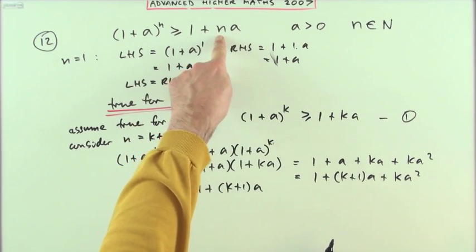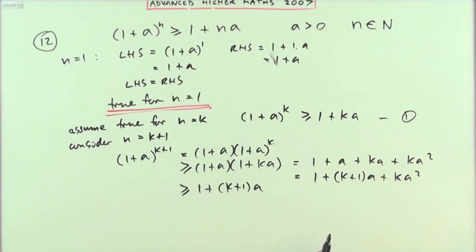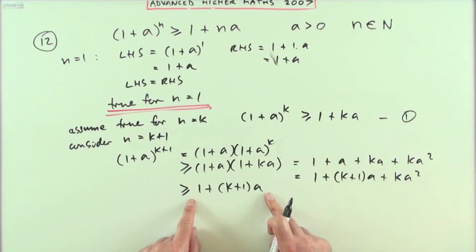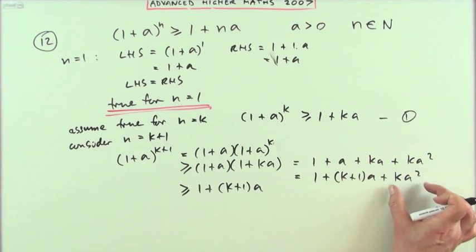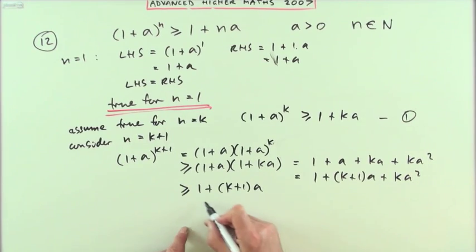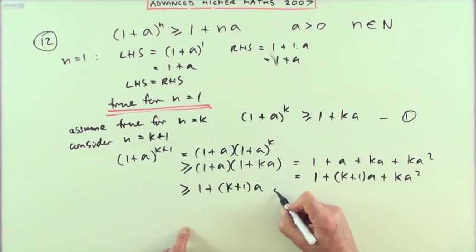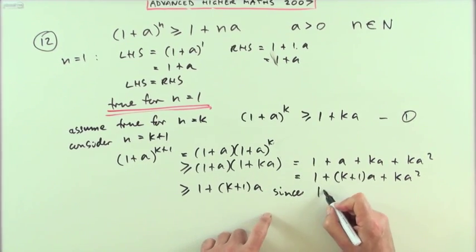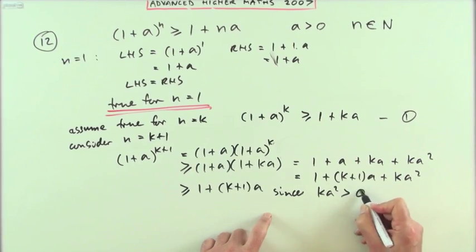If it's greater than this, then it's certainly greater than that, because this had this extra part ka^2. So it's greater than that since—I can maybe put that step down a bit—since ka^2 is a number greater than 0, and that's the required result.